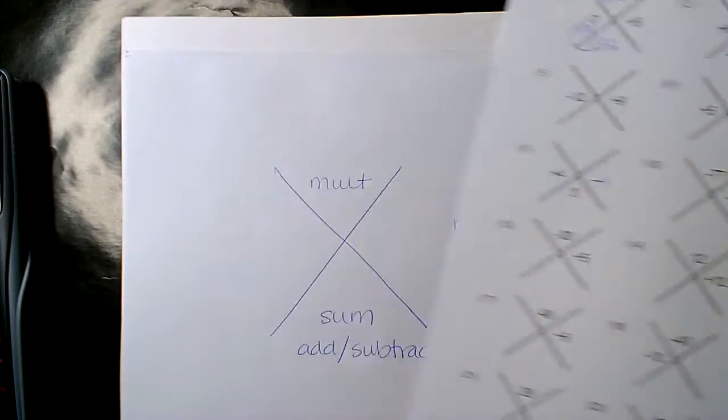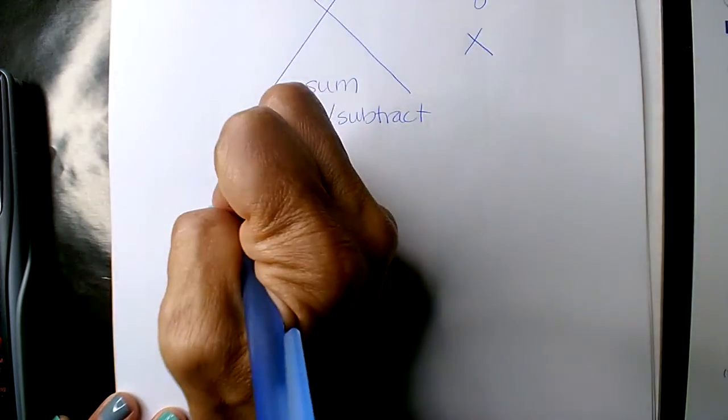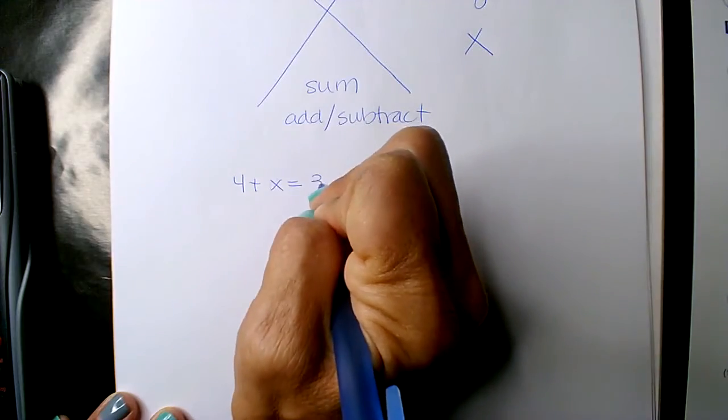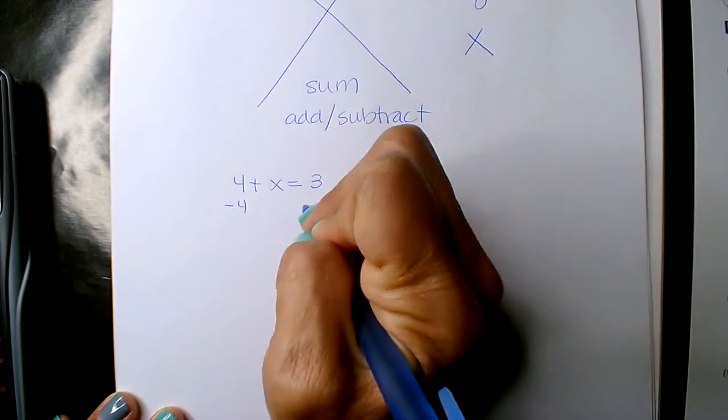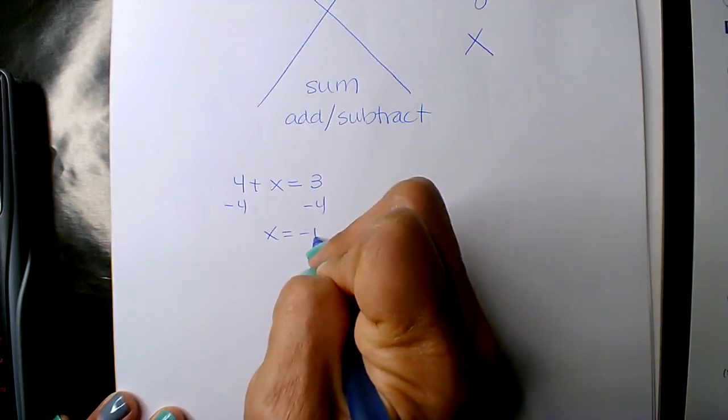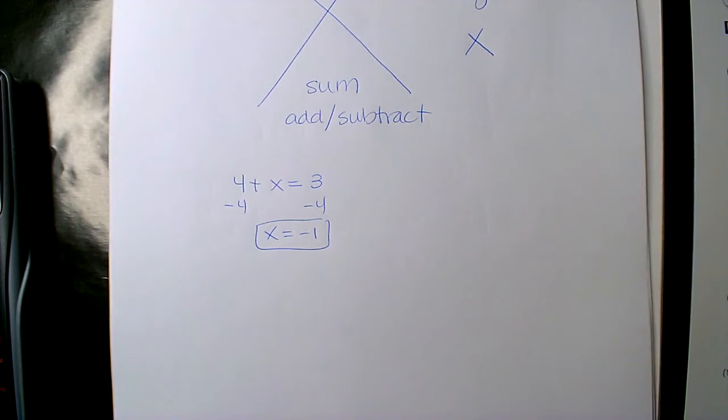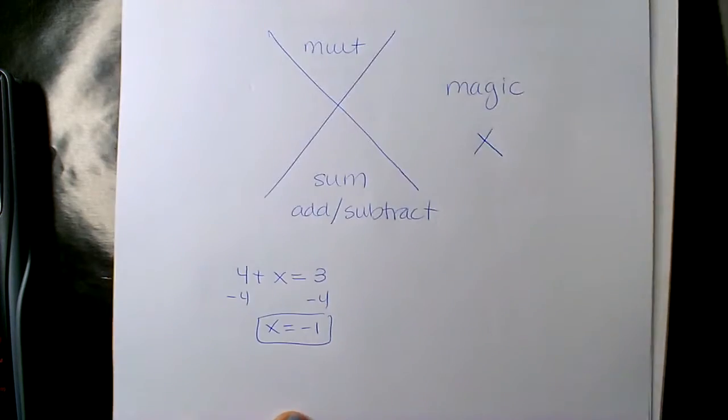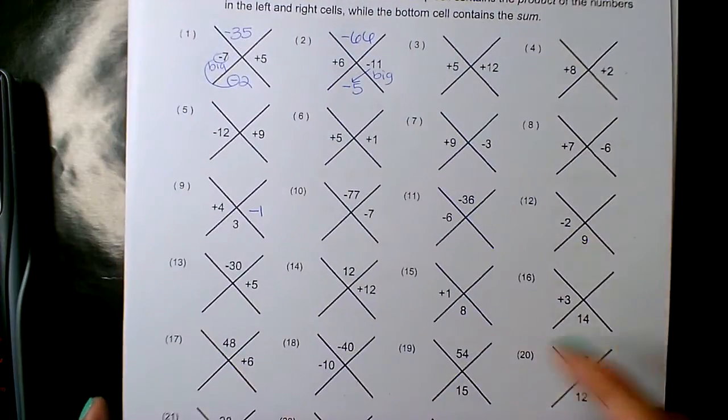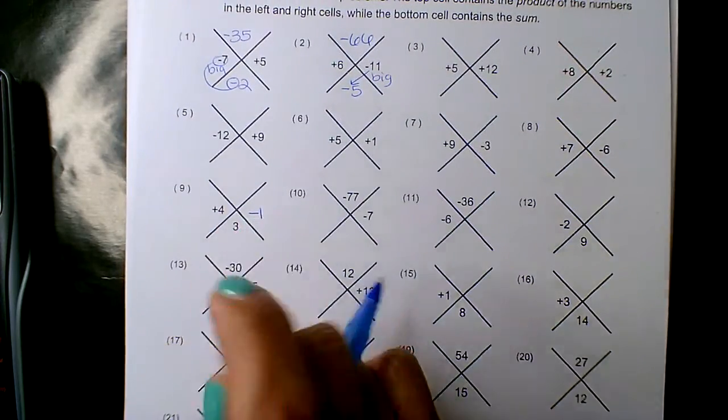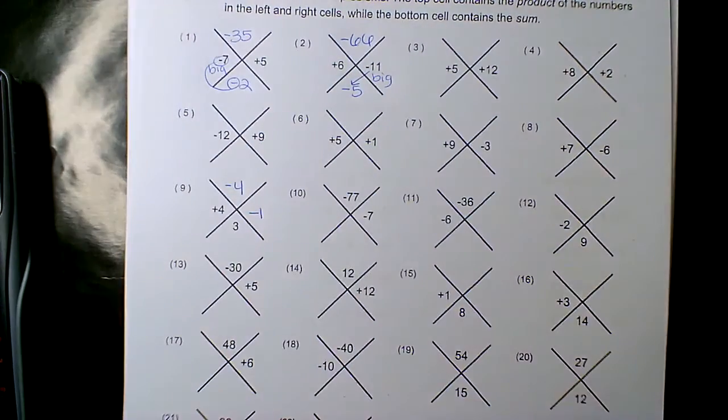Or, if you guys want to form a one-step equation, 4 plus what number gives me 3? Well, take away the 4, and you get your negative 1. So you can also form a one-step equation, but nobody does that. In all the years of teaching, nobody does that. You guys basically come up with it. Okay, so now 4 times negative 1 gives me the product negative 4.